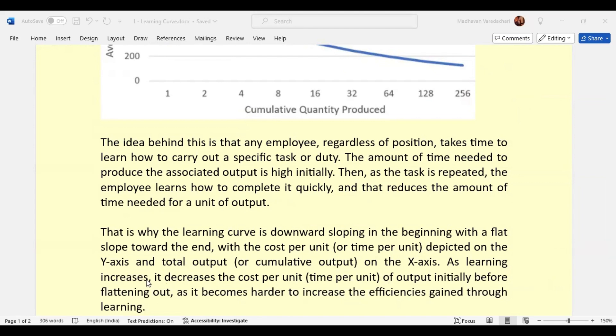As the learning increases, it decreases the cost per unit, that is time per unit of output initially, before flattening out, as it becomes harder to increase the efficiencies gained through learning.